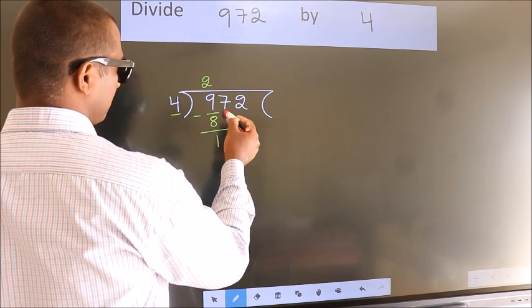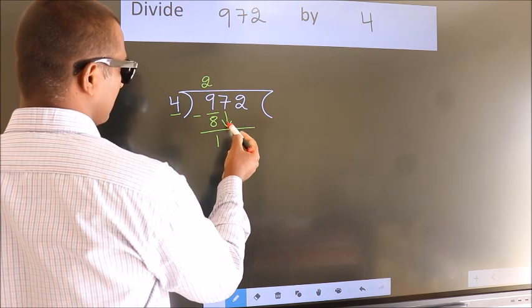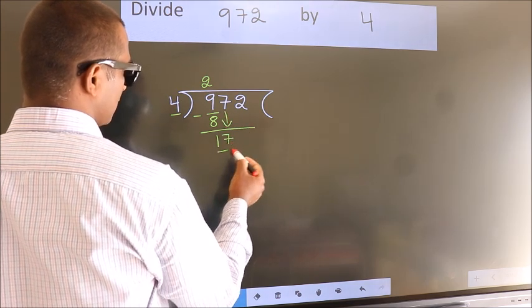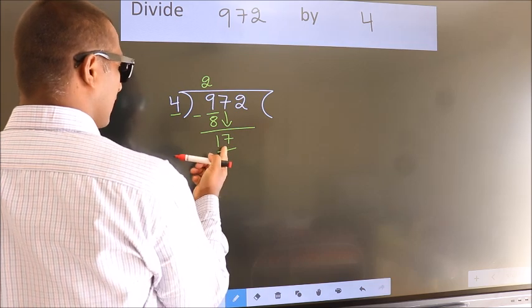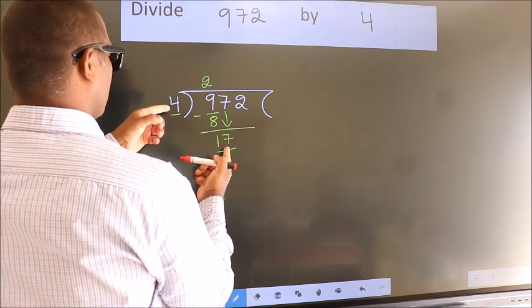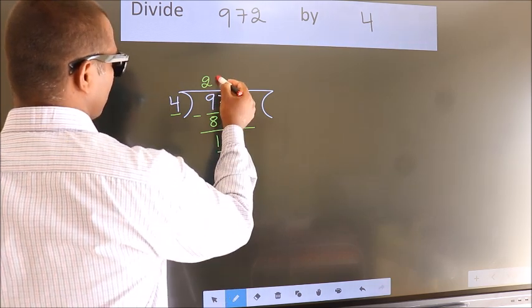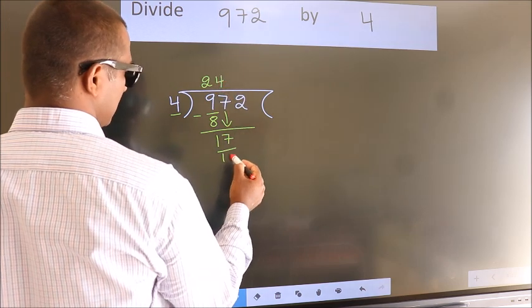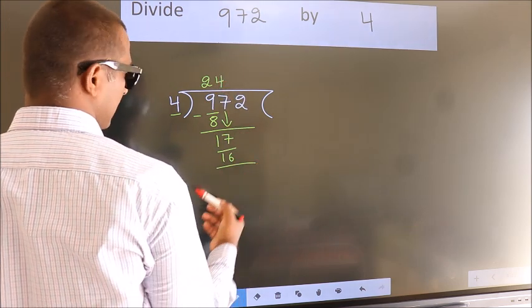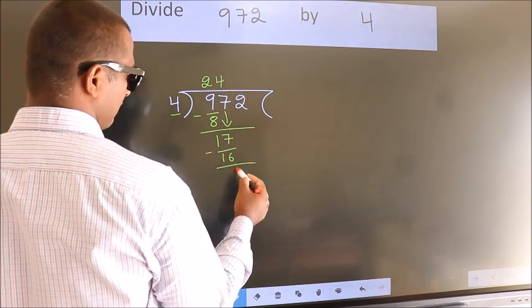After this bring down the beside number. So 7 down. So 17. A number close to 17 in 4 table is 4 4s 16. Now we subtract. We get 1.